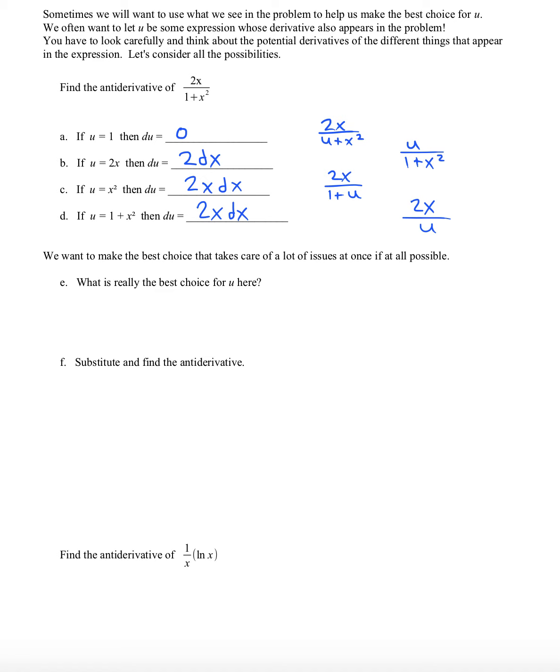Now let's remember that we are finding an antiderivative here. So whichever of these four choices we make is going to have a dx attached to it. Let's not forget that. And the question is which of these choices is best? We're looking to get rid of x's as much as possible. And we also want to find where the derivative of the thing that we selected as u is also appearing in the integrand.